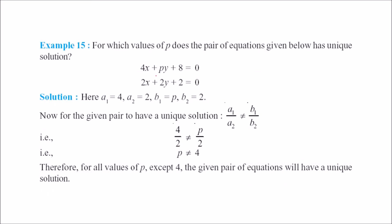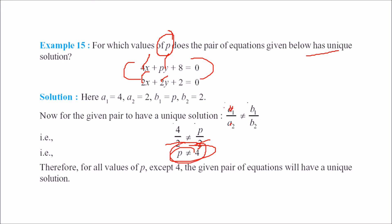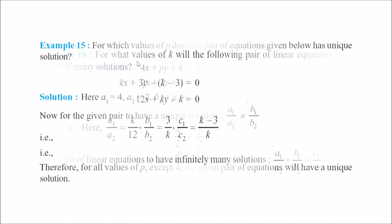Another example: 4x plus py plus 8 equals 0 and 2x plus 2y plus 2 equals 0. Find the value of p for which this system has a unique solution. A unique solution exists when a1/a2 is not equal to b1/b2. Here, 4/2 is not equal to p/2, which gives p not equal to 4. So for all values of p except 4, the pair of equations has a unique solution.